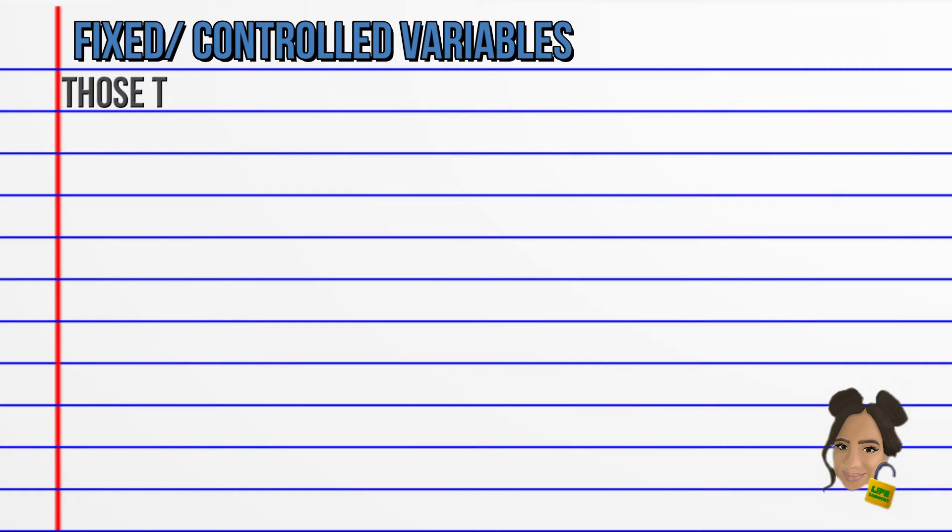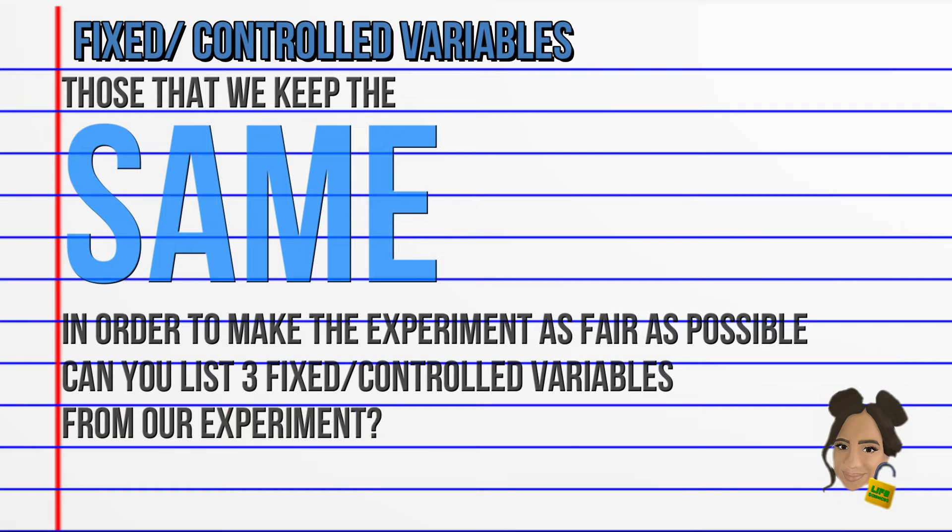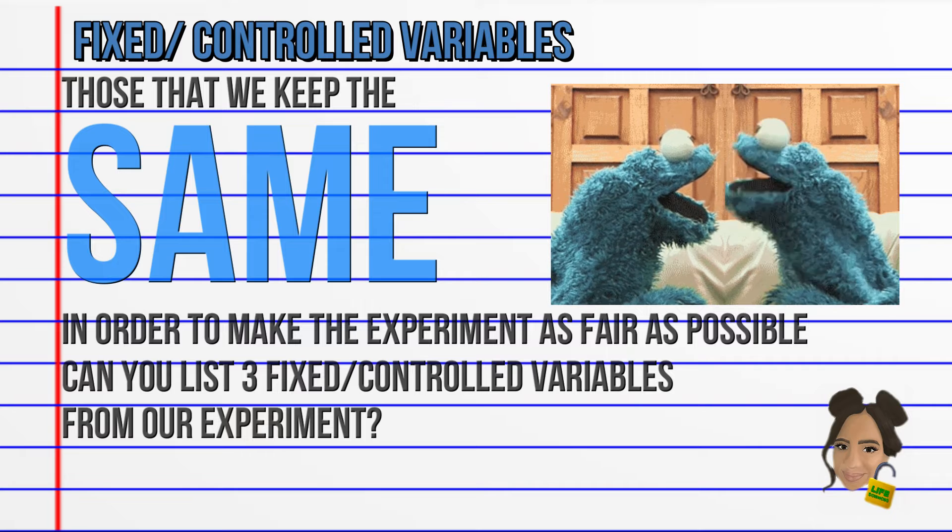Fixed or controlled variables are those which we keep the same in order to make the experiment as fair as possible. Can you list three from our experiment? These are the answers we've got.